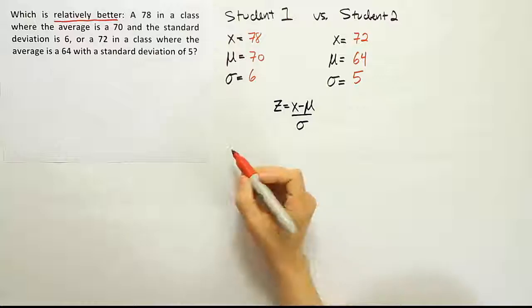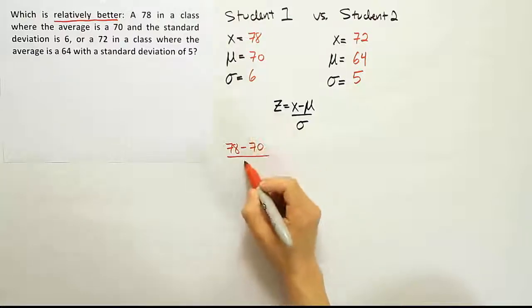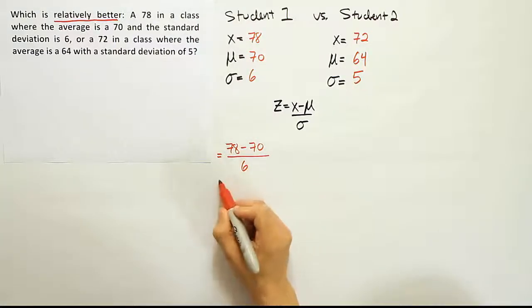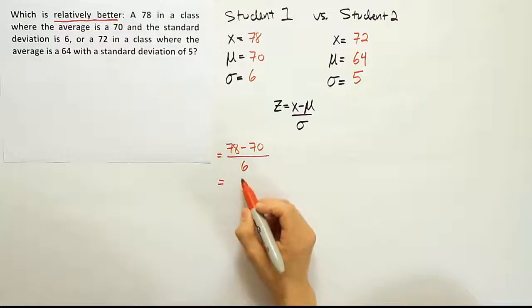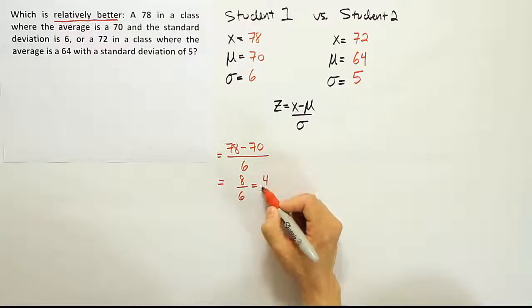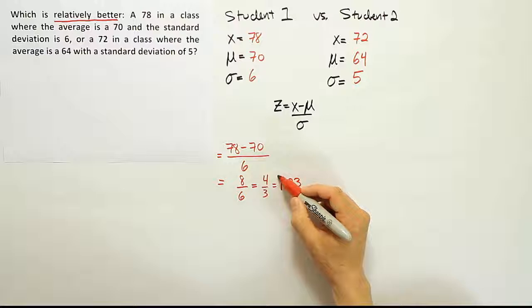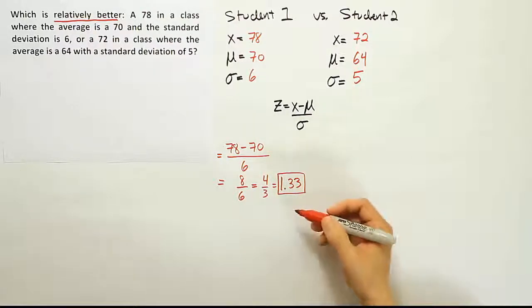Okay, so for student 1, it's going to be 78 minus 70 over 6. That's going to be his z-score. Now that's a difference of 8. 8 divided by 6. If we reduce that, we end up with 4 thirds. And this is 1.3 repeating, right? 1.33. Because that's 1 and 1 third.